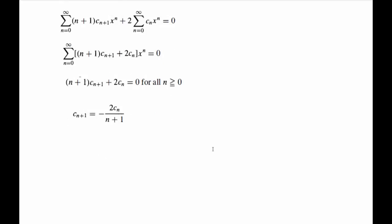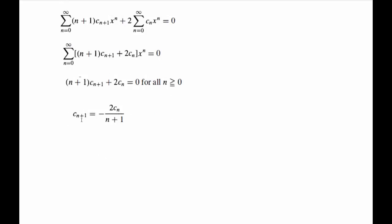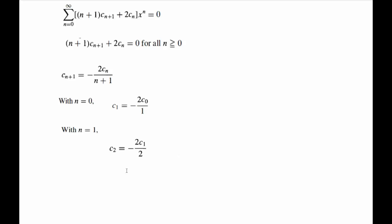So now our aim is to actually solve this recurrence relation, and you would have solved these earlier in courses like calculus two or wherever you study power series. So let's start to look at a few terms so that we can get an idea of what the pattern is. So with n equal to zero, c₁ is simply going to be negative 2c₀ over 1.